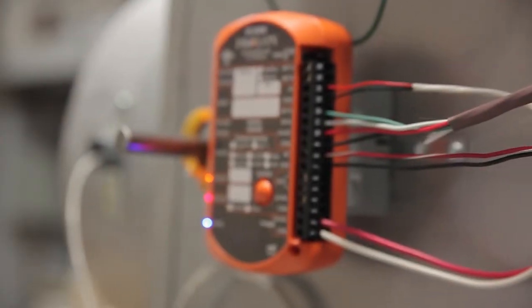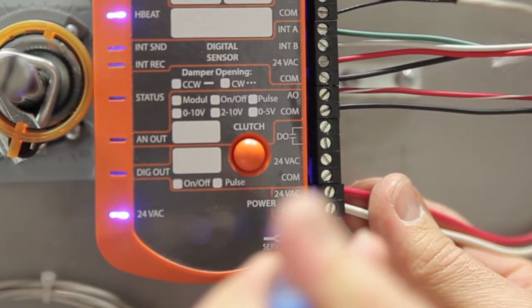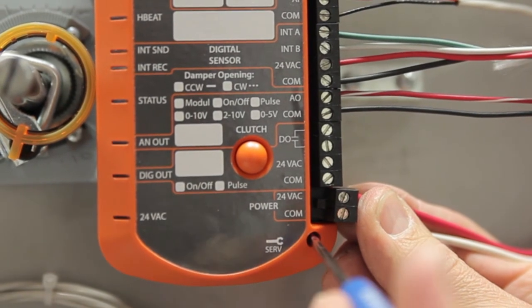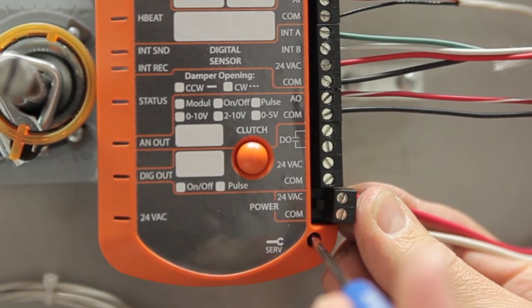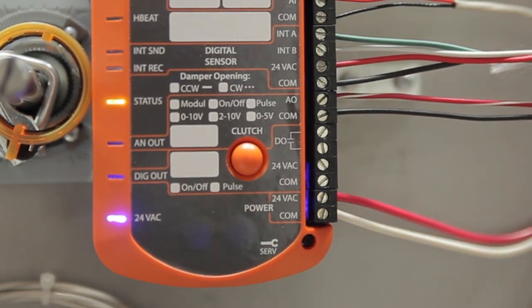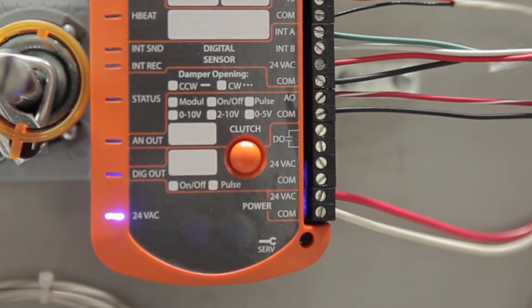Should the actuator open in the wrong direction, here's how you invert it. First, unpower the controller by pulling out the supply terminal block. Press and hold the service button on the front of the controller using a screwdriver. While pressed, reconnect the supply terminal block, then release the button. Notice the status light's behavior confirming a different sense of rotation.